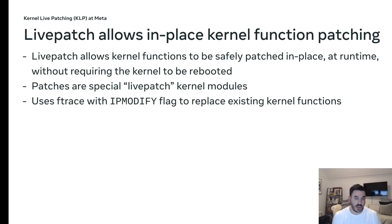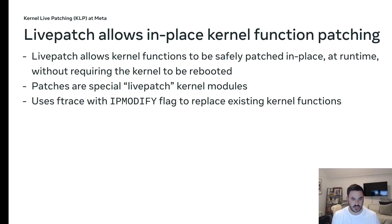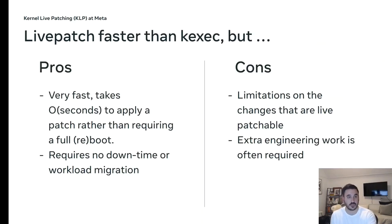Live patches are technically special types of kernel modules. When you're applying a live patch, you're really loading a kernel module, and the init hook is where the patch is applied. You use the IP_MODIFY flag with ftrace to replace the existing kernel function in the way just described.